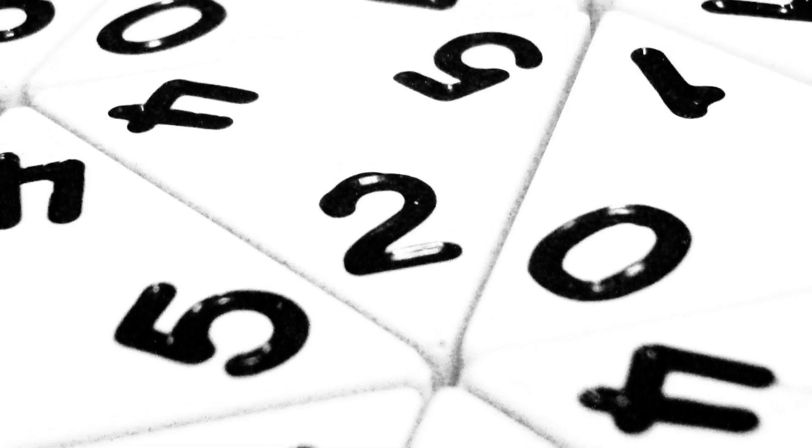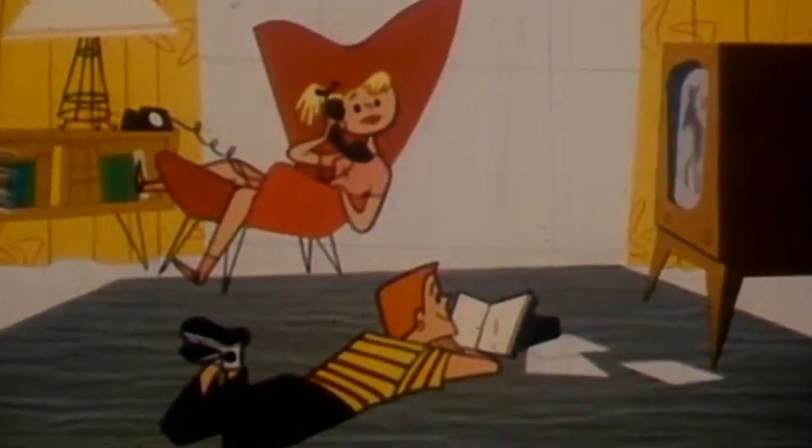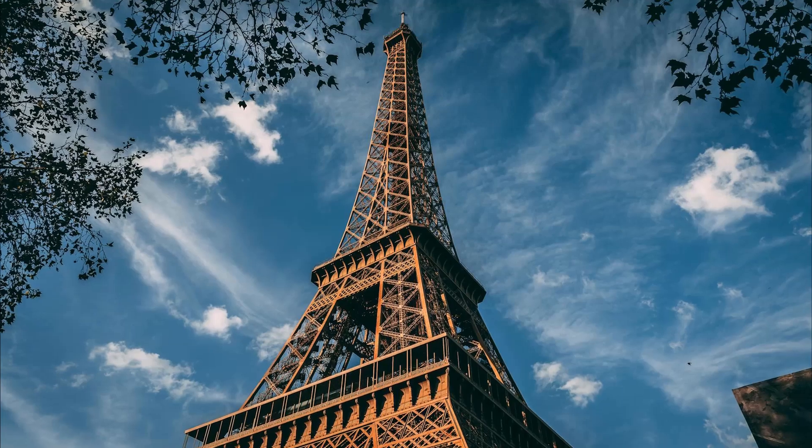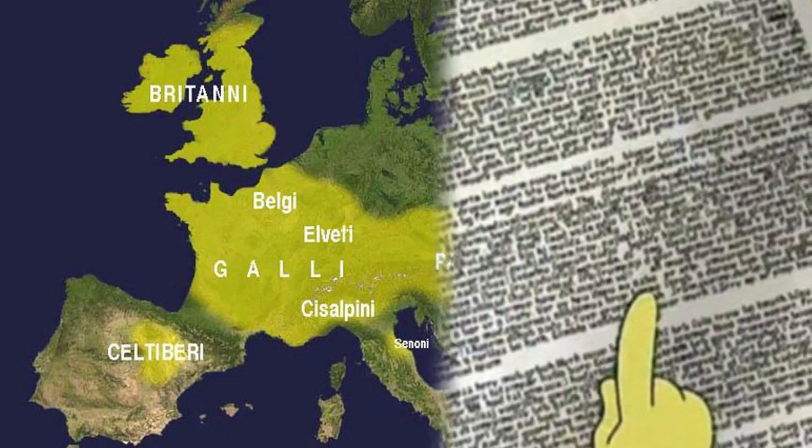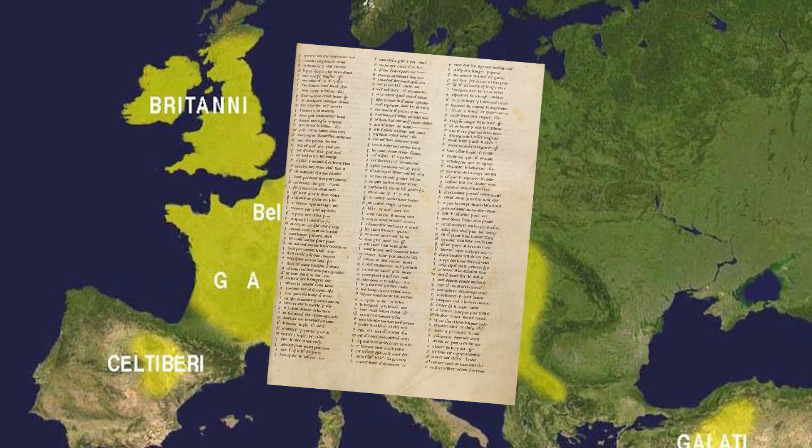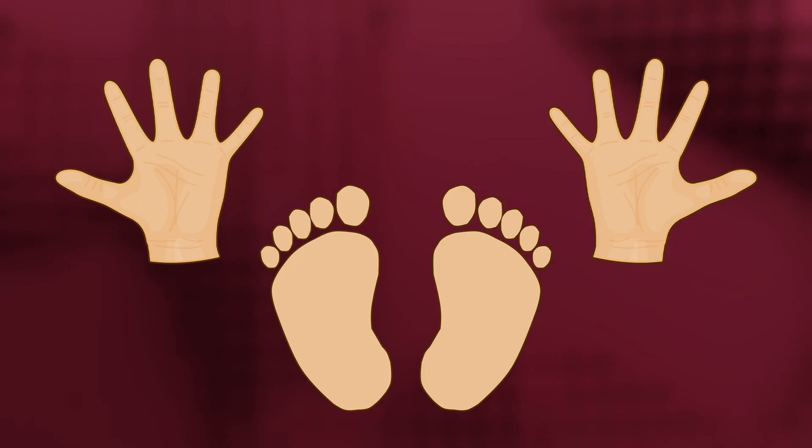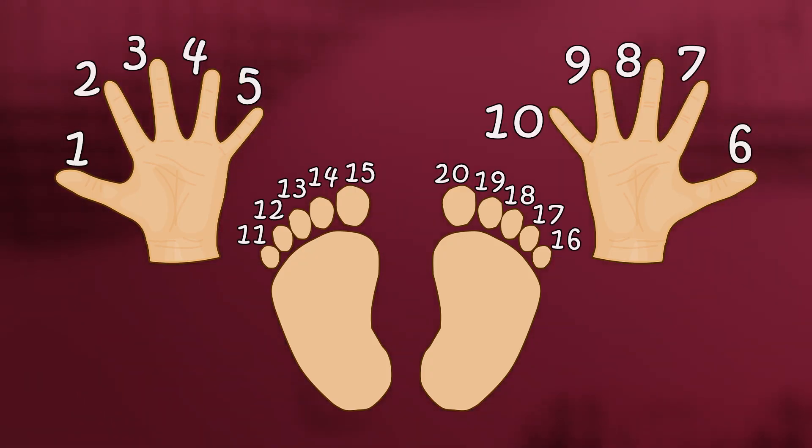The way people use numbers is a window into their cultural and linguistic history. The French use a base 20 system. Its roots can be traced into pre-Roman Celtic and Gaulish cultures, who may have counted using all the fingers and toes, which makes up 20.